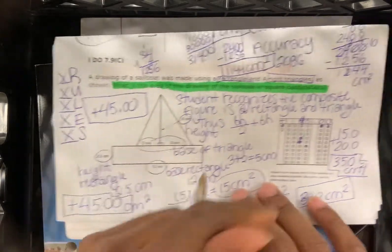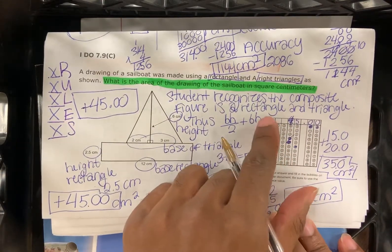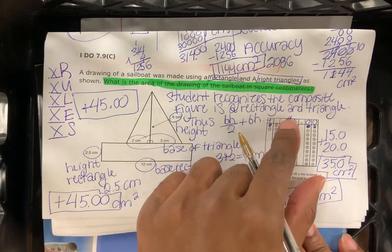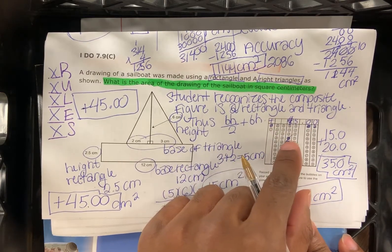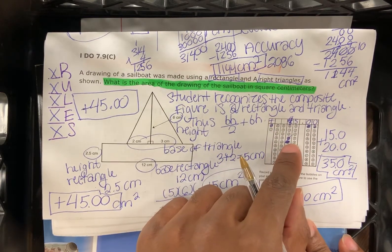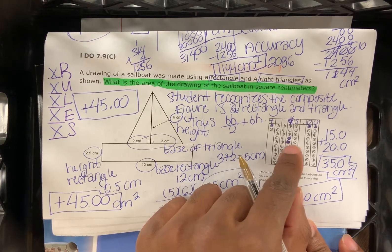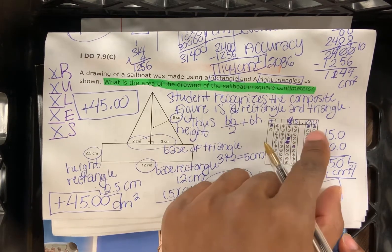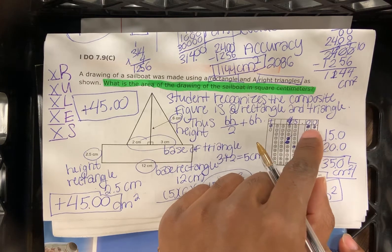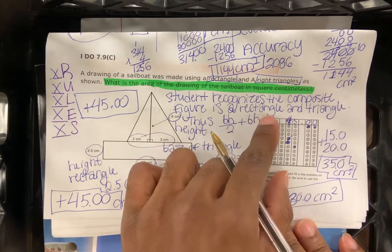Centimeters squared. And then we're going to write that into our bubble box. It's going to be positive four, five. So four in the tens place, five in the ones place, and then two zeros in the tenths and then the hundredths place. It's going to be positive.